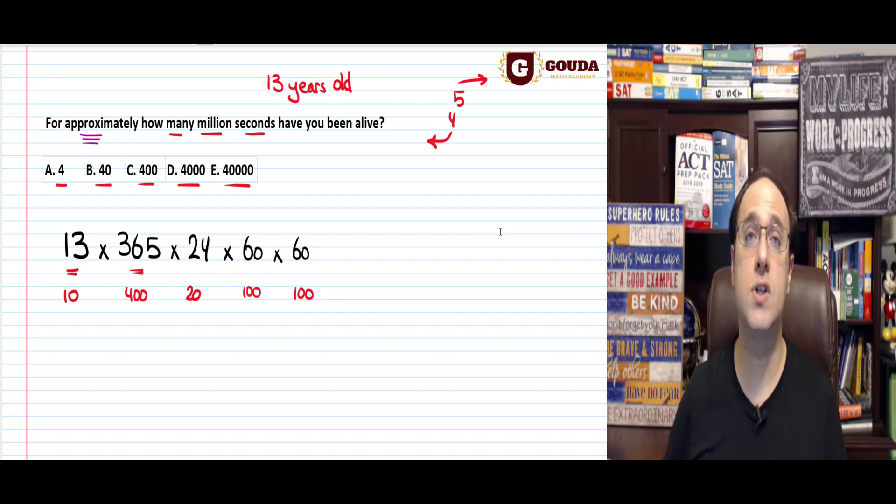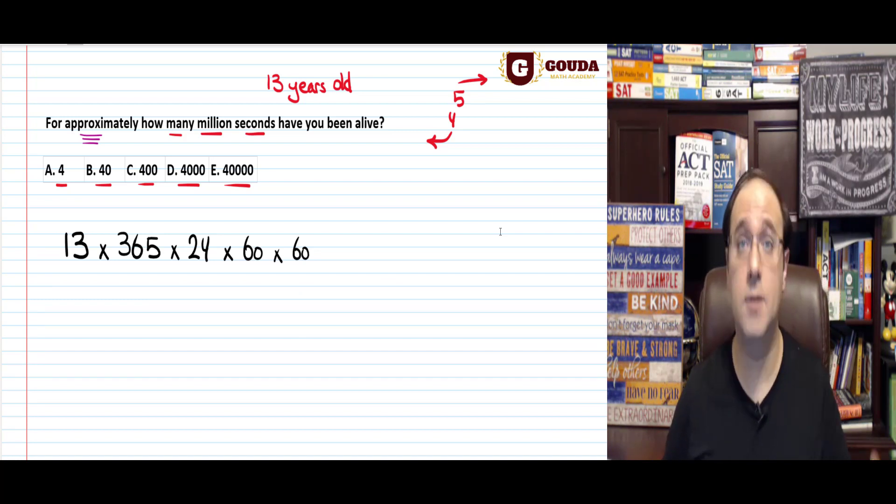365 rounds up to 400. Remember, you're always trying to get zeros when you round up or down. 24 rounds down to 20. 60 rounds up to 100, and the other 60 rounds up to 100 as well. If you multiply these by each other, just look at the very first digit, the first digit on the left. You get 1 times 4 times 2 times 1 times 1. So you're going to get an 8 at the beginning. Now all my answers start with 4. So your answer is either going to be 80 million, 8 million, 800 million, 8,000 million. That's really far away from the fours I have right here. So I know this is wrong. I know this is too much of an approximation, and that's not accurate enough to answer this question because I have multiple choice.